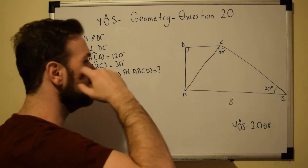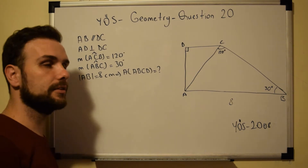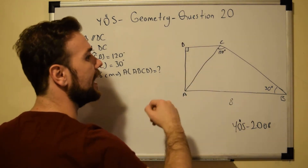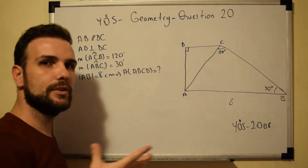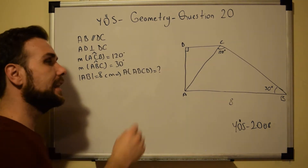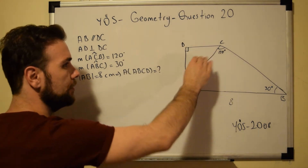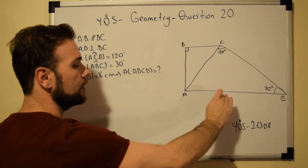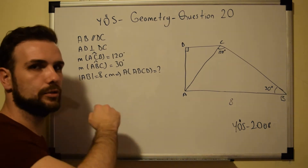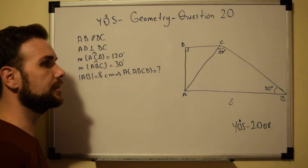What do we need in order to find the area of the trapezoid? We need the two bases and we need the height. Once we have those, the formula is the addition of the two bases times the height, all over 2, which gives us the area of the trapezoid.